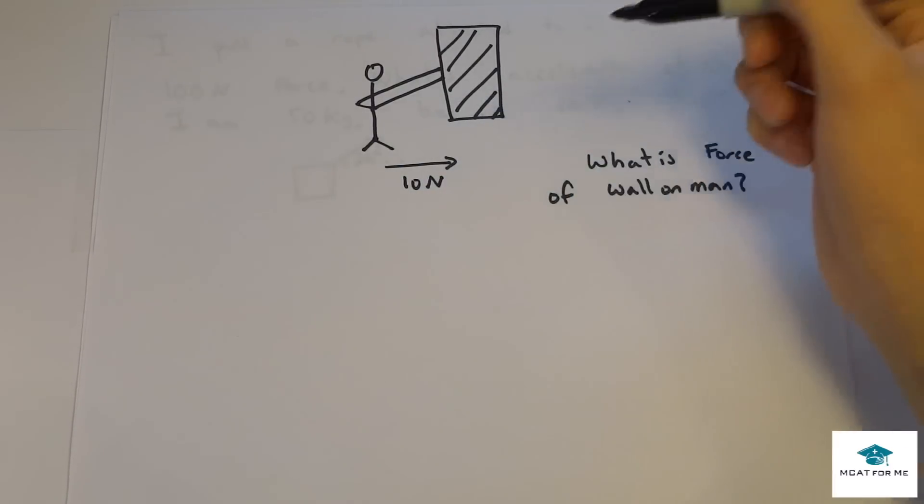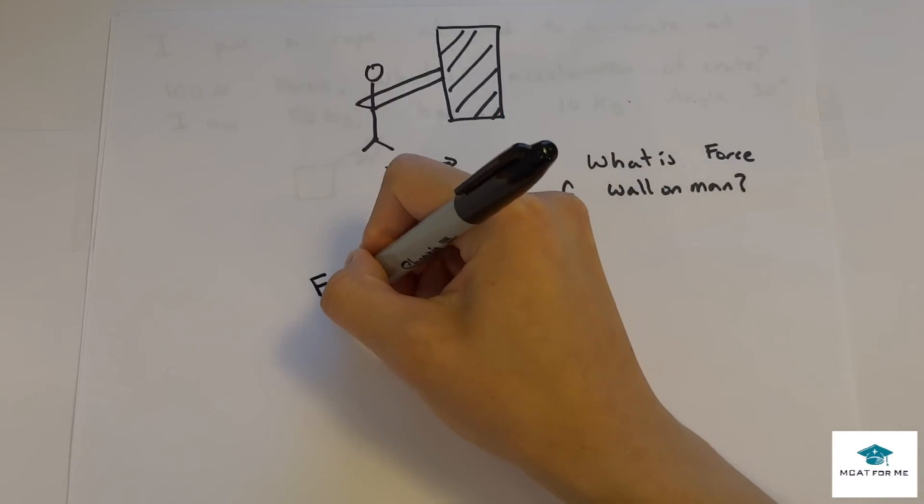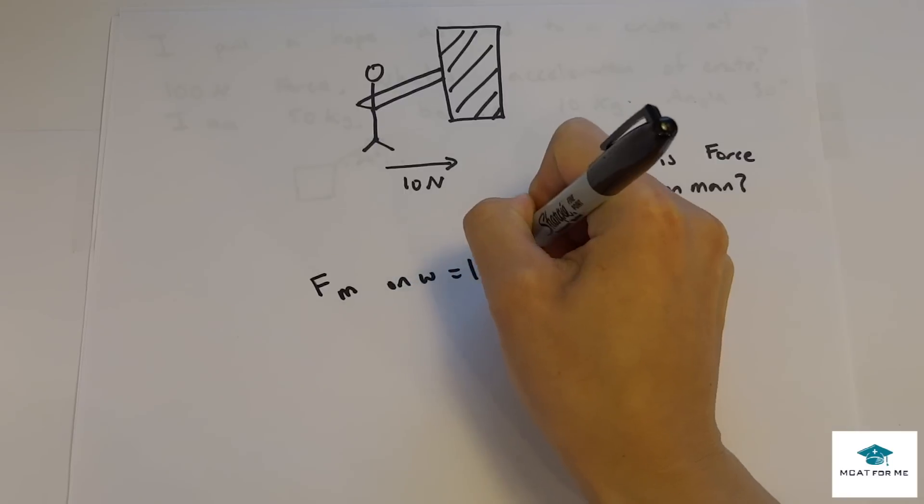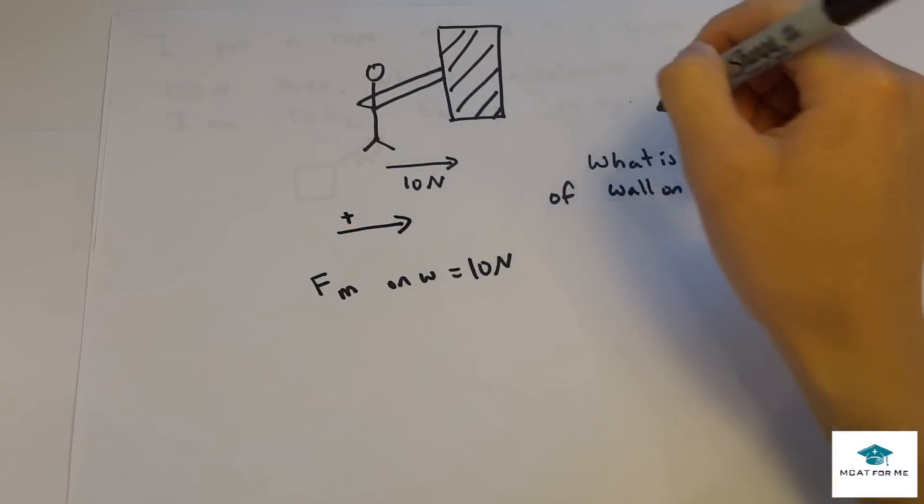So we see this man, he's pushing against this wall at 10 newtons. So his force of man on the wall is 10 newtons. And we'll say that this is positive, so positive is to the right.